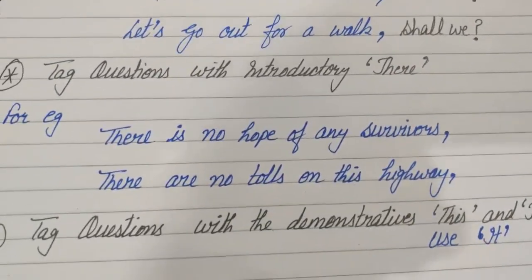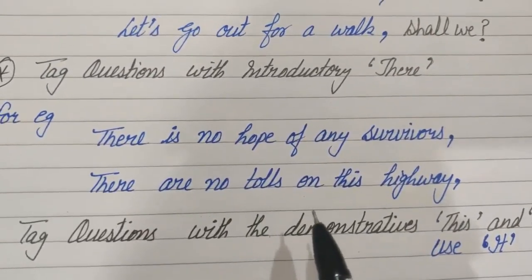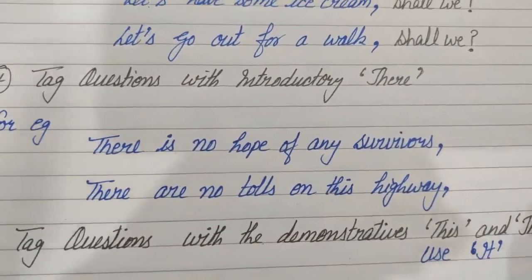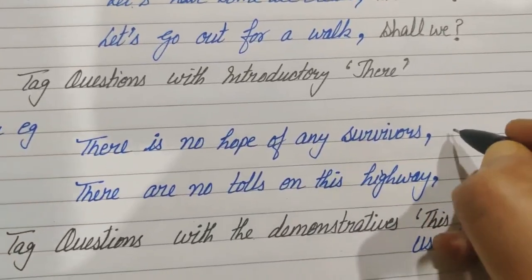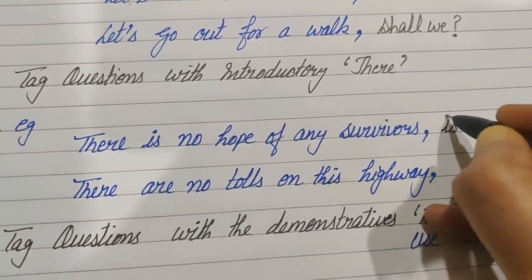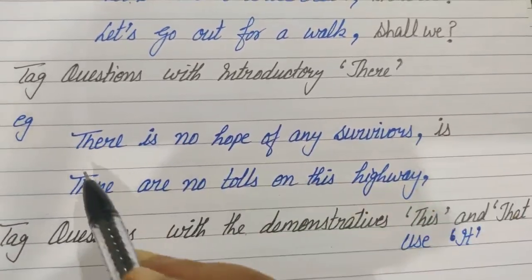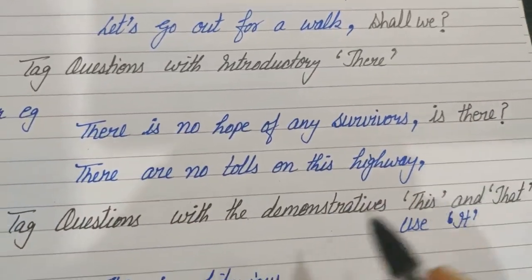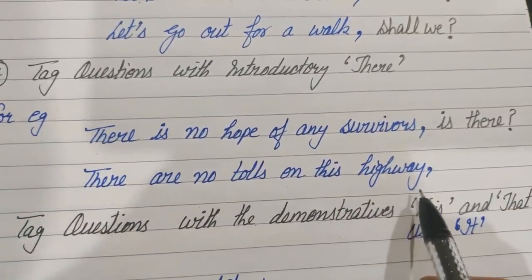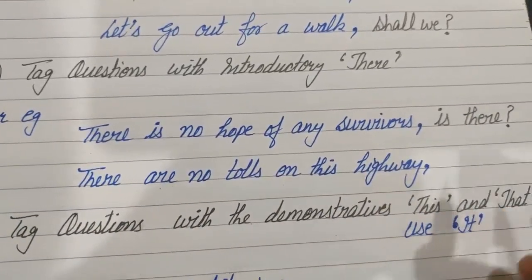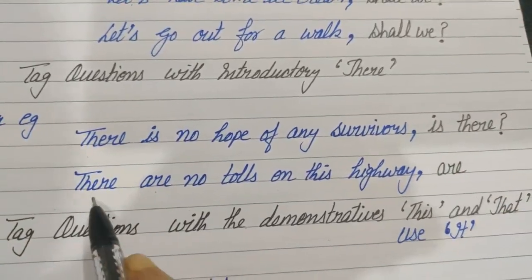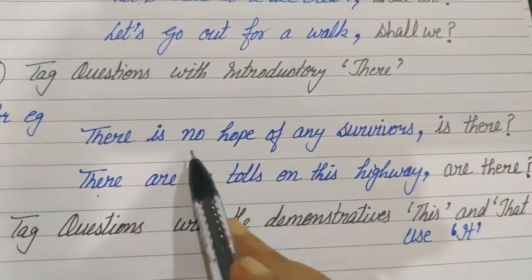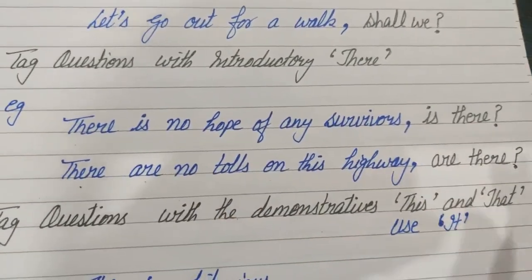Tag questions with introductory 'there': we will pick 'there' only. 'There is no hope of survivors' — it's a negative statement, so we make it positive. The helping verb is 'is,' and we add 'there': is there? 'There are no tolls on this highway' — the helping verb is 'are,' and again there is 'there': are there? Because the statements were negative, the tags are positive.